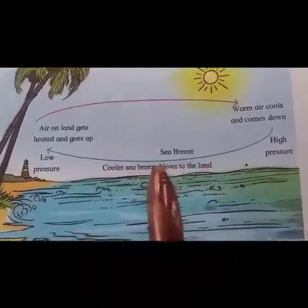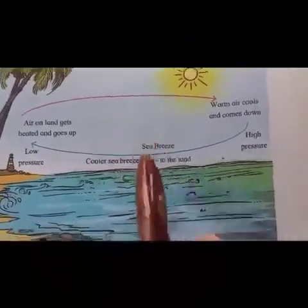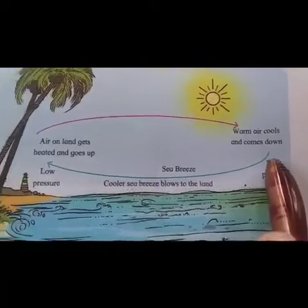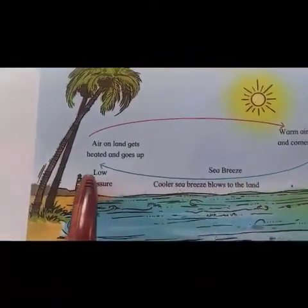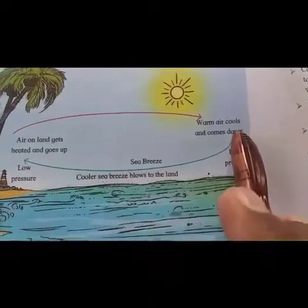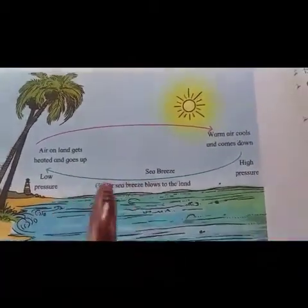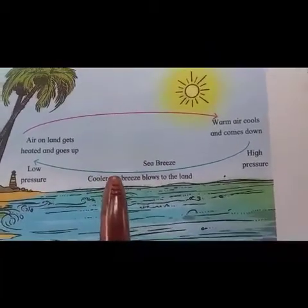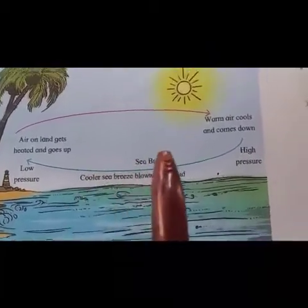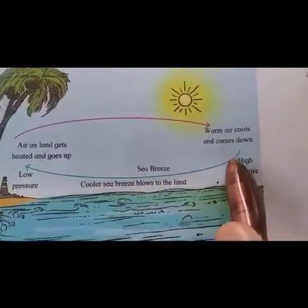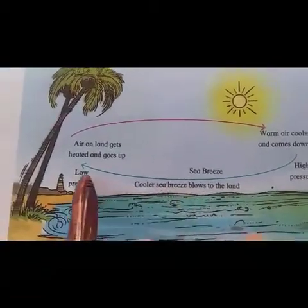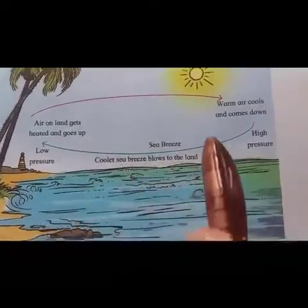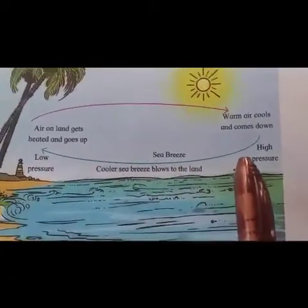Next element of weather: winds. Air starts moving from high pressure areas towards low pressure areas in a horizontal direction. This movement of air is called wind. Wind blows from high to low pressure areas, and its speed depends on the amount of difference in air pressure.